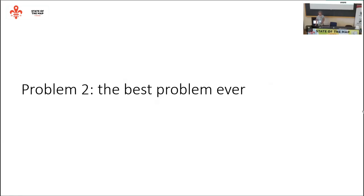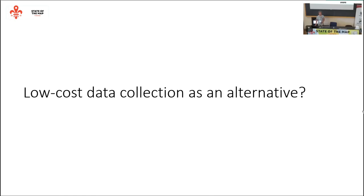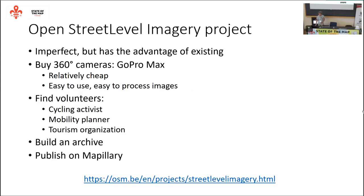Problem number two — which is the best problem ever to have — is that we had some money to spend. We have a corporate membership and now we have some money, so we had to do something with it. We thought maybe we can lead by example: if we show people how easy and cheap it can be to collect your own imagery, other people will start following that example. It took us a while to find a way to do this.